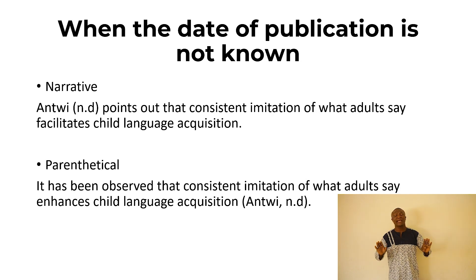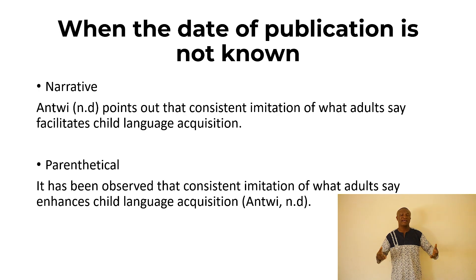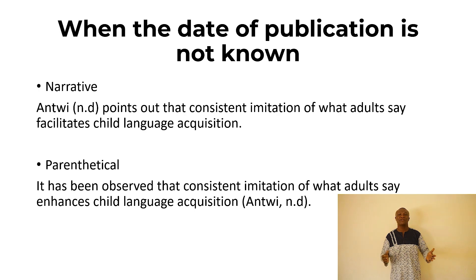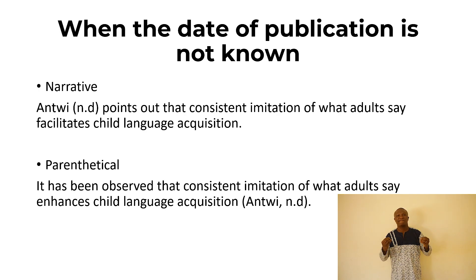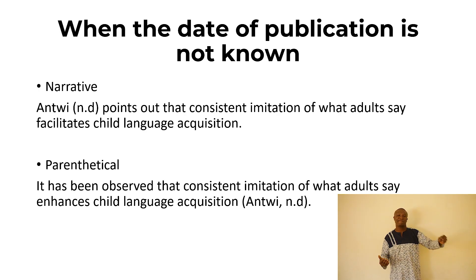When we take a document and that document doesn't have a date, sometimes it happens. You use a particular source and it's good, but the date of publication is not on it. In place of the date of publication, you write 'n.d.' For example, Entry, in brackets, n.d., which means 'not dated,' points out that consistent imitation of what adults say facilitates child language. You can do the same in a parenthetical way, with n.d. in brackets.